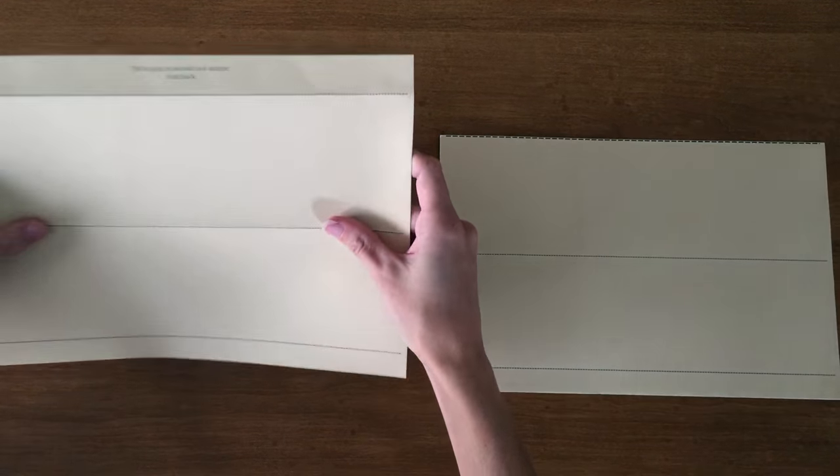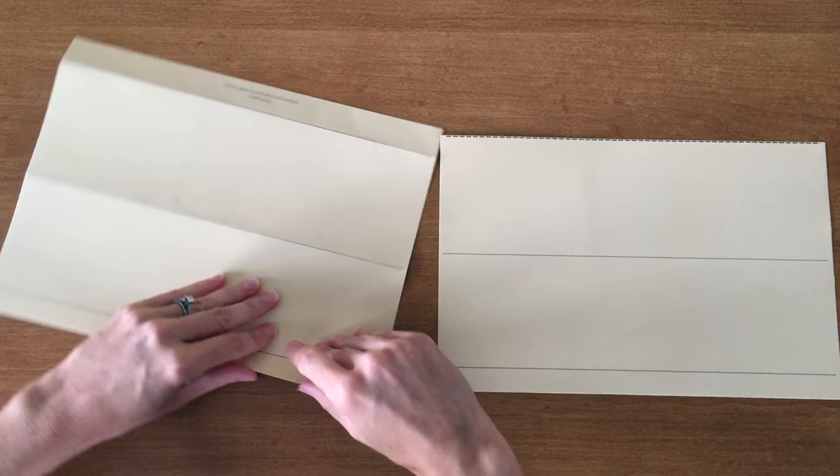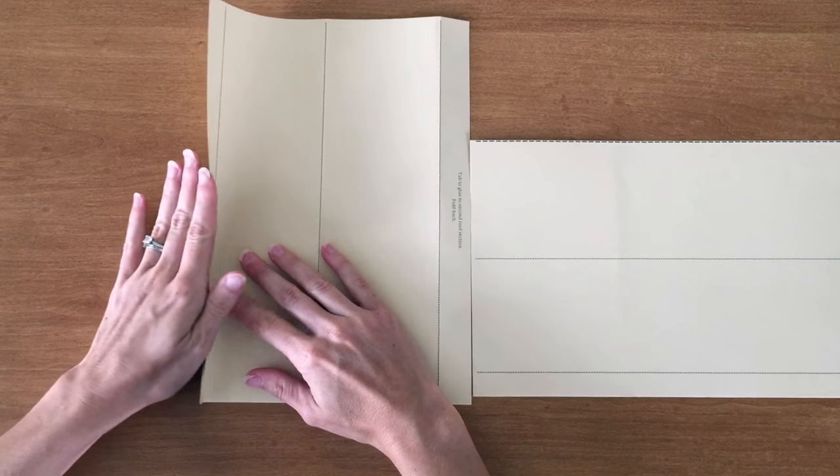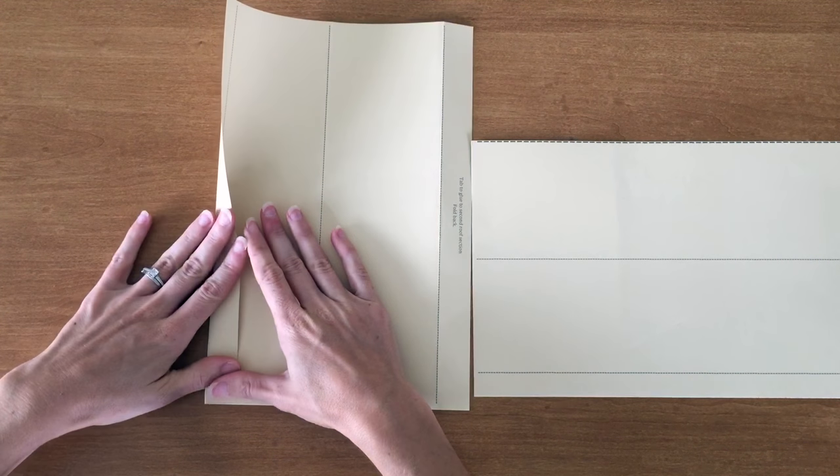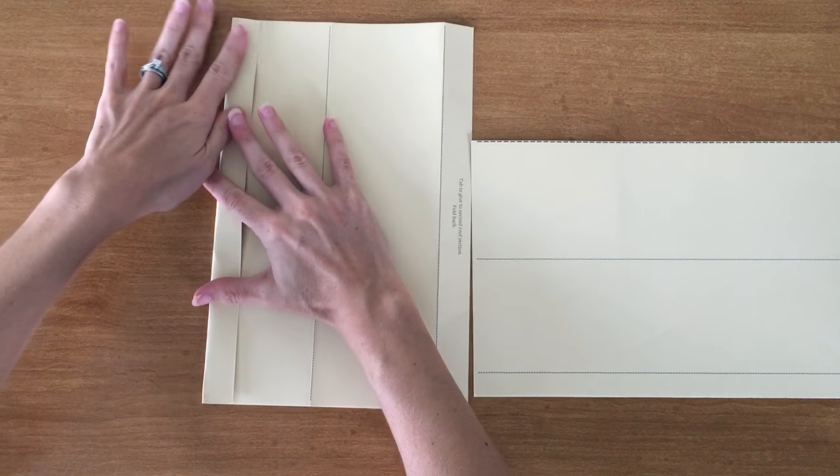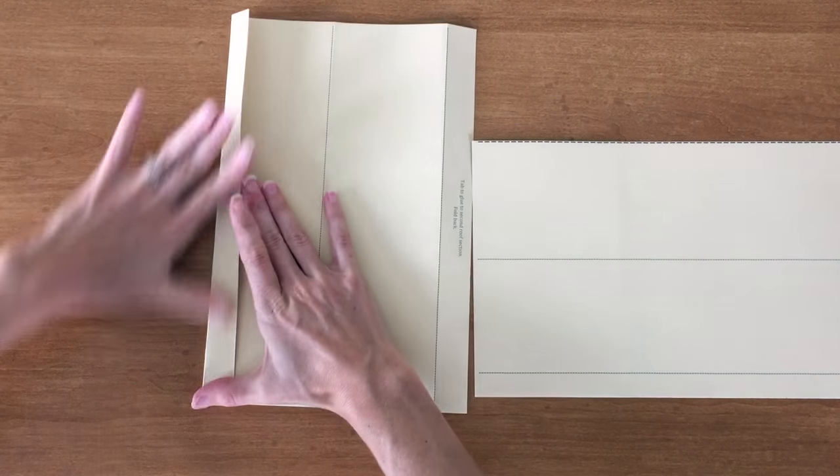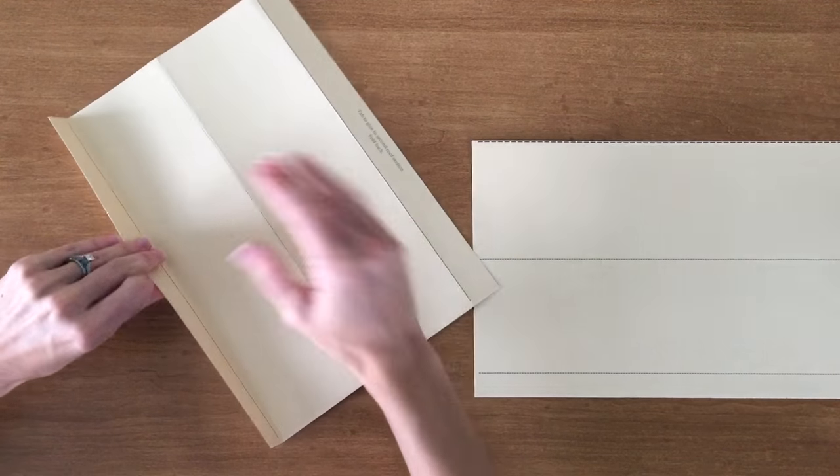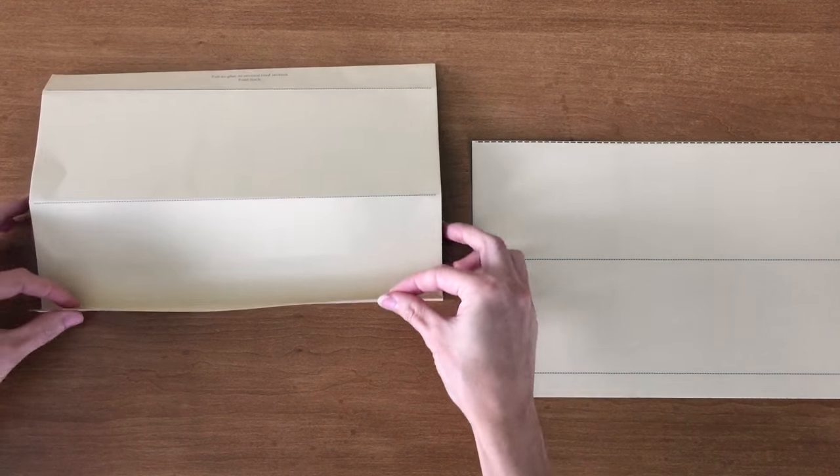And then these bottom sections are actually going to be folded forwards. So if you don't fold right on the line, that's okay. It will still work out. But you want to be close to it. So backwards in the middle, forwards at the bottom.